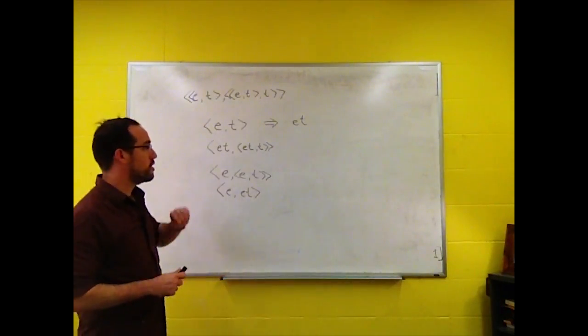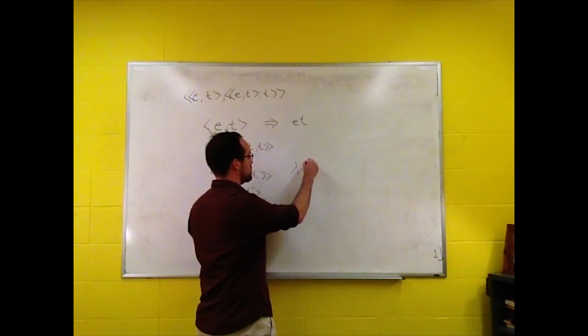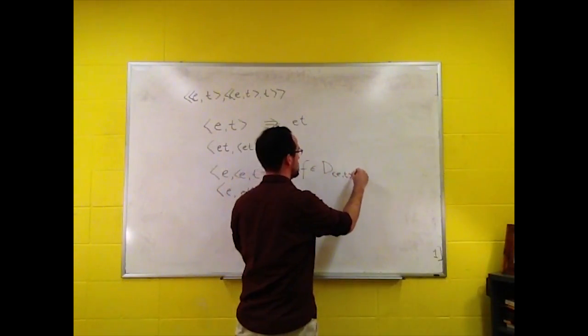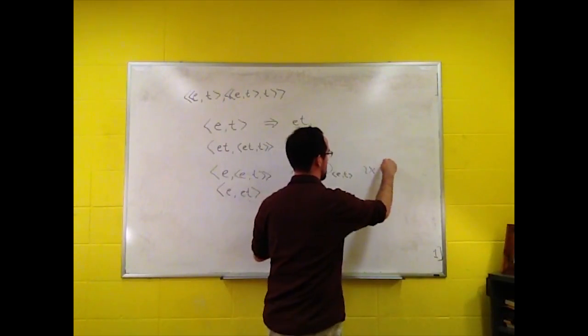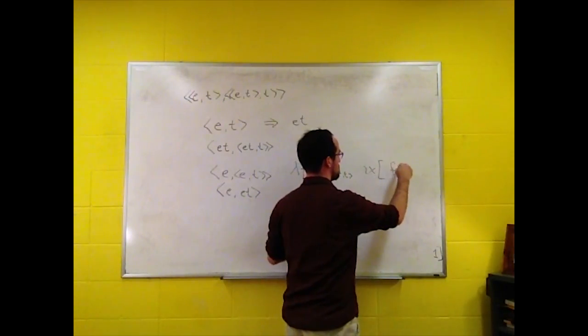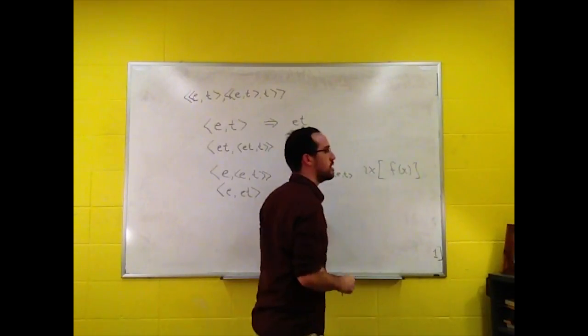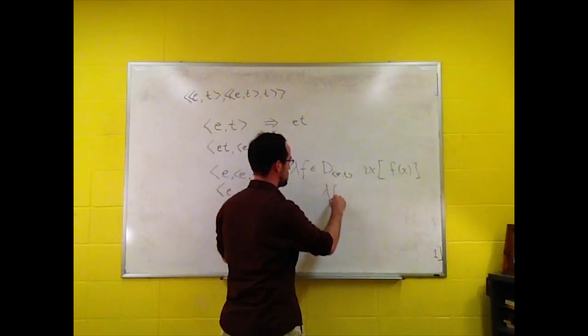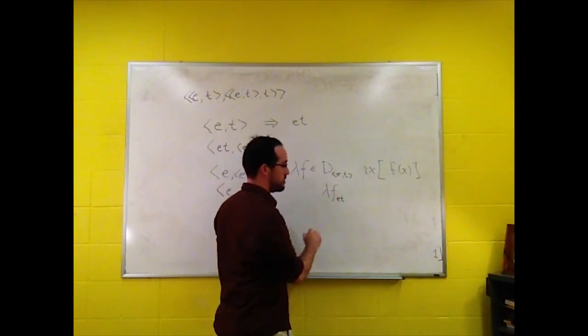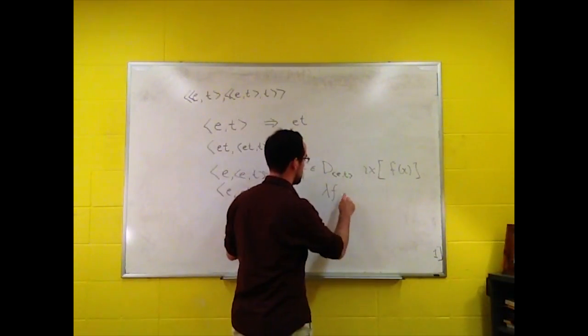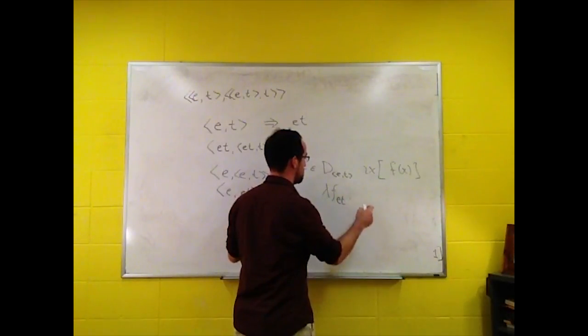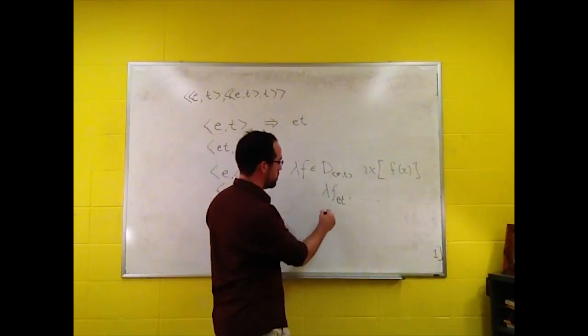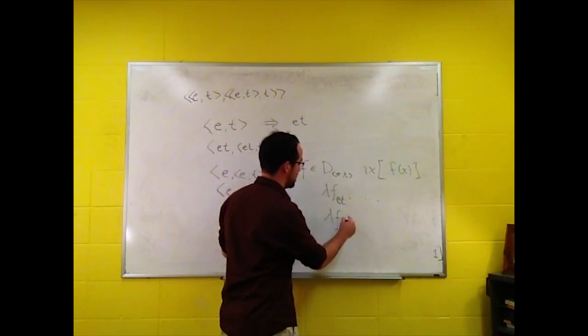Now, this works as well for the lambda expressions. So if we have a function of type ET, and then we have something like 'the,' if we have a meaning like that, we can abbreviate the lambda expression, lambda F of type ET. And the rest will be the same. And of course, usually, people won't even write that much, they'll just write lambda F.